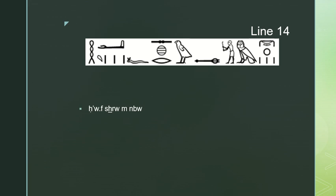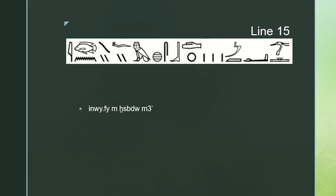Hau F, Sekru M, Nebu — the hieroglyphic writing here has a circle H, which is a typo by the ancient scribe. This was a learning text, probably transcribed by a scribe not fully certified yet — the Egyptian scribal equivalent of someone finishing up high school — and he makes a few errors like that one. His flesh was overlain in gold: hau F is the flesh and Sekru is a stative of the verb 'to overlay.' Inui Fee — with that F rather than the singular for a dual — M Hespadu Ma'a: his eyebrows were made of pure, or true, lapis.